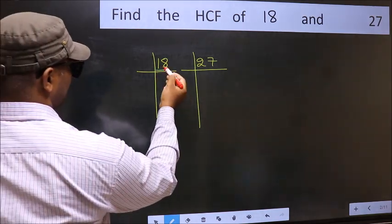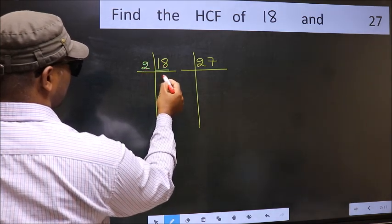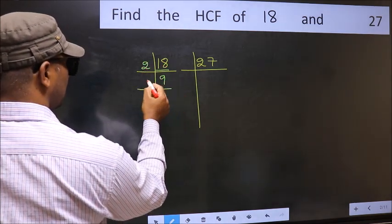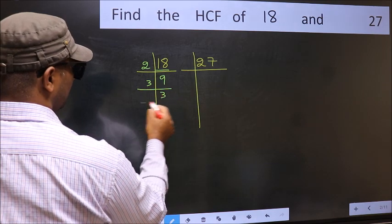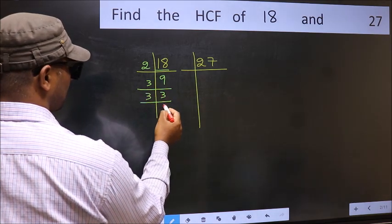Here we have 18. 18 is 2 times 9. 9 is 3 times 3. 3 is a prime number, so 3 times 1.